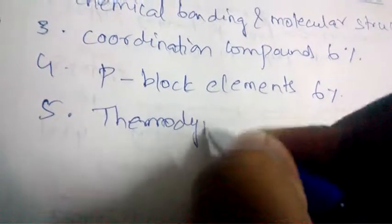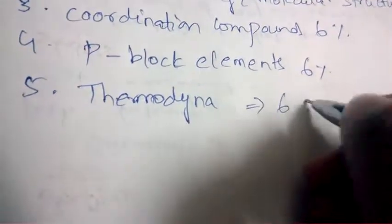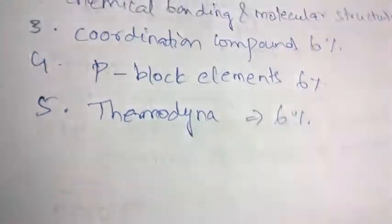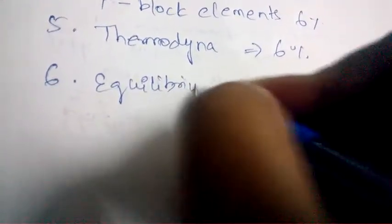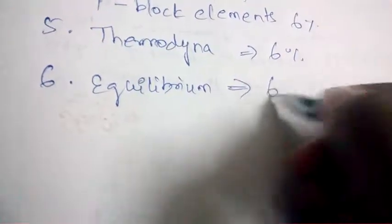Next is thermodynamics — from thermodynamics also 6% of questions will be asked in the AIIMS chemistry paper. Next is equilibrium, which also has a weightage of 6%.